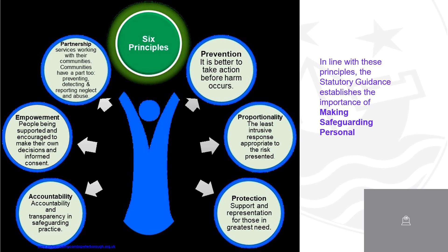There are also the six principles of safeguarding. These are: Accountability, Empowerment, Partnership, Prevention, Proportionality, and Protection. They are all equally important to understand how a healthcare worker could safeguard a vulnerable adult. Please make some notes on these as they are essential details which you can refer to in your assignments.